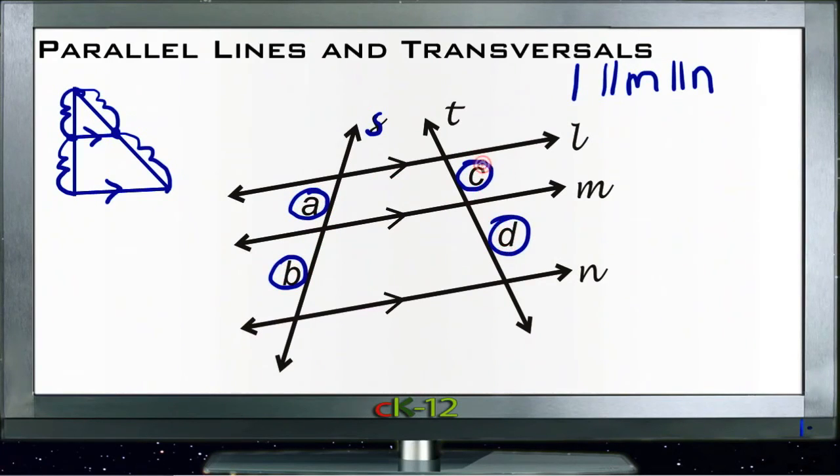Or you can say that C is proportional to D in the way that A is proportional to B, and it works for any number of lines.